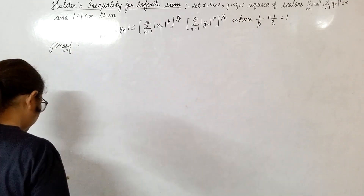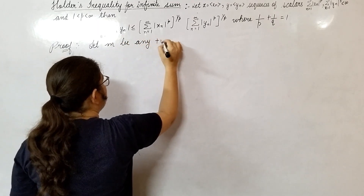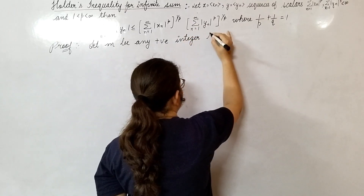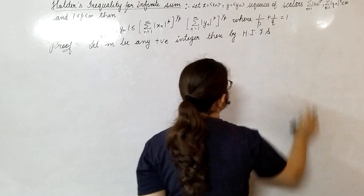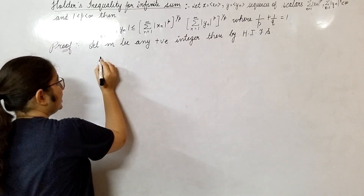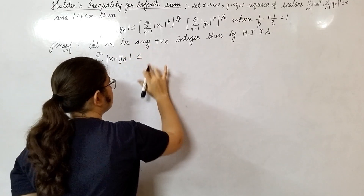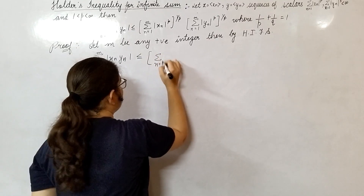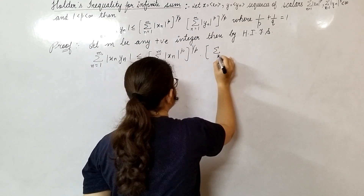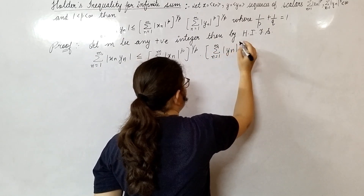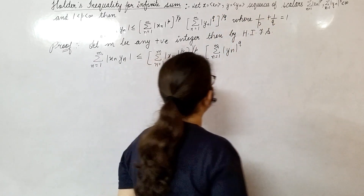Now let's start the proof. Let m be any positive integer. Then by Hölder's inequality for finite sums, we have: summation n from 1 to m of |x_n y_n| is less than or equal to (summation n from 1 to m of |x_n|^p)^(1/p) multiplied by (summation n from 1 to infinity of |y_n|^q)...